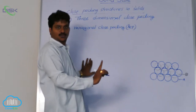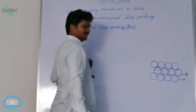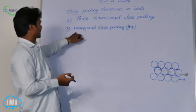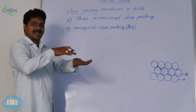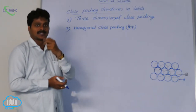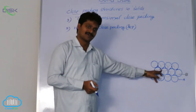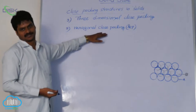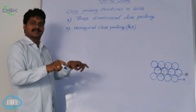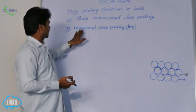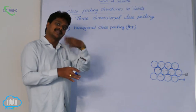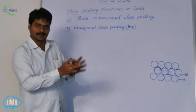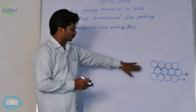Later I will discuss about these two voids in detail. This is the tetrahedral void, mentioned as T. This is the octahedral void, mentioned as O. So when hexagonal close-packed layers are stacked one over the other, we get two types of voids: one is tetrahedral void and the other one is octahedral void. Now, how to frame the hexagonal close-packing structure? Let us take a two-dimensional hexagonal close-packed layer and place another hexagonal layer over it, such that the spheres of the second layer occupy the depressions of the first layer. So here, two layers we have taken.